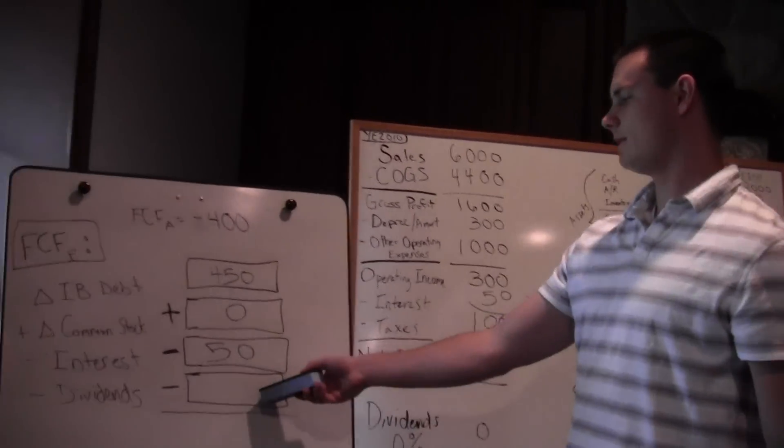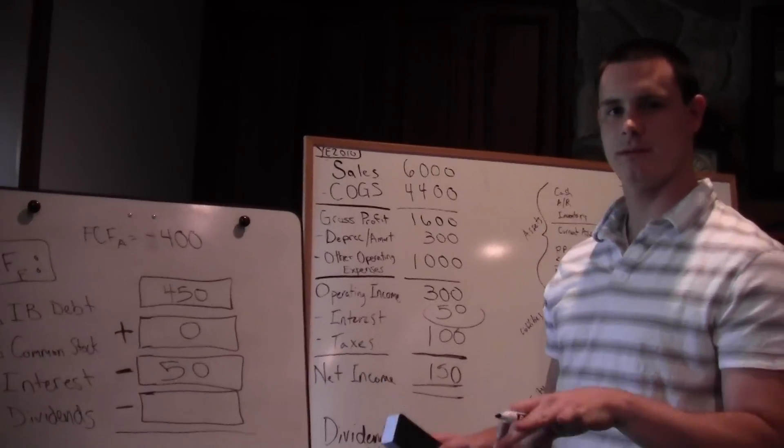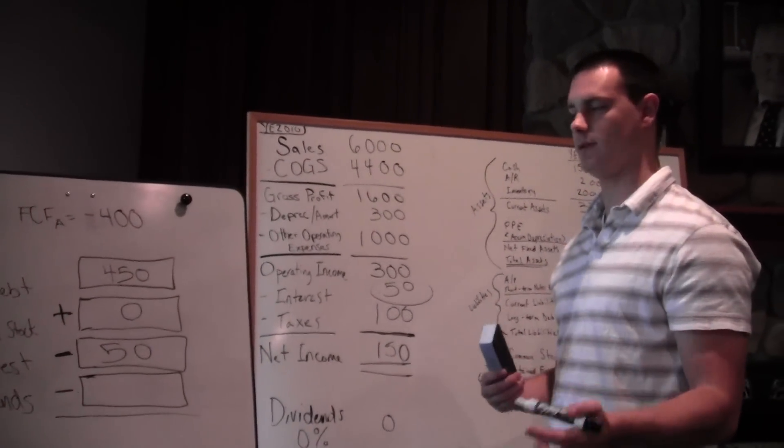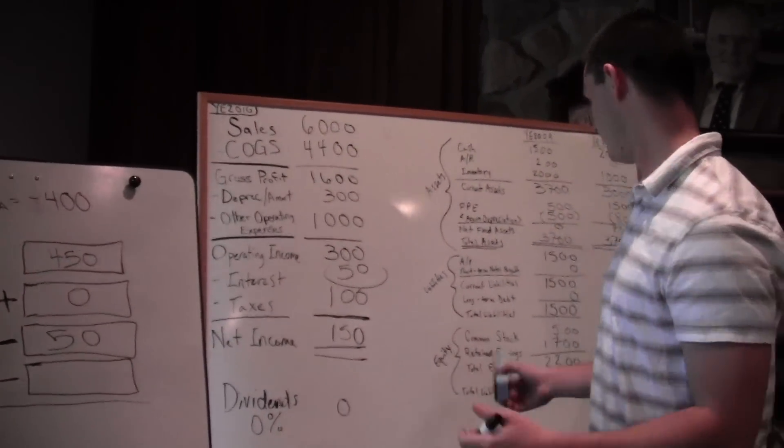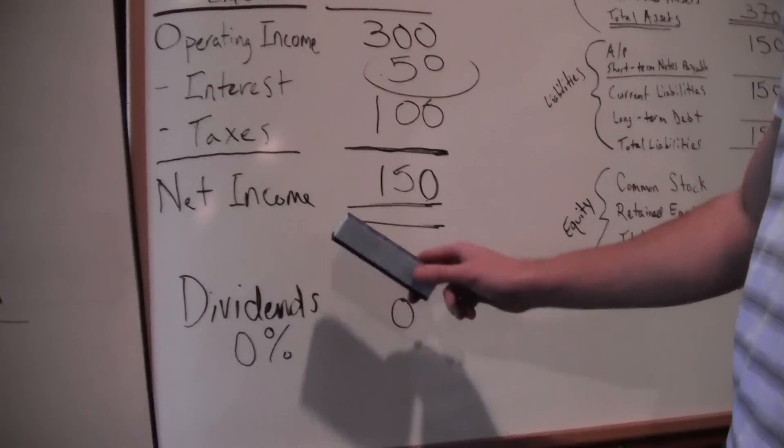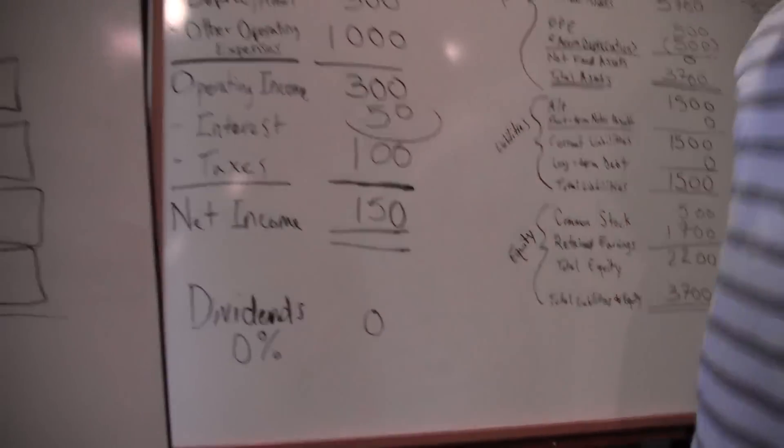Then we look at dividends. Dividends aren't on the income statement, but we put it at the bottom. After net income, you can pay out dividends or retain into retained earnings. For now, we didn't pay any dividends out, so we retained all our income. Zero.